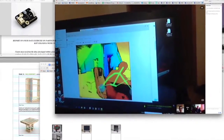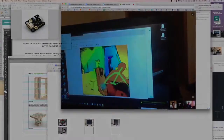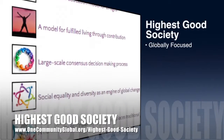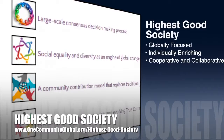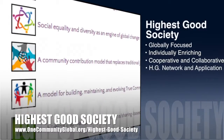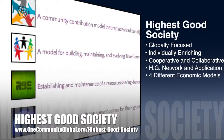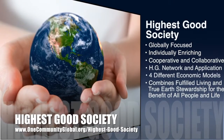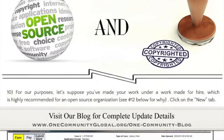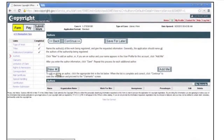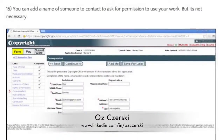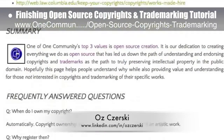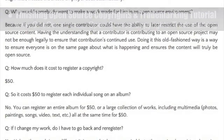The One Community approach to highest good society is globally focused, individually enriching, cooperative and collaborative, includes a highest good network and application for different economic models, and combines fulfilled living and true earth stewardship for the benefit of all people and all life on this planet. This last week the core team continued editing and formatting the work of Oz Chersky, lawyer specializing in trademark and copyright law, finishing the open source copyrights and trademarking tutorial with images, icons, a new reference section, and other details.